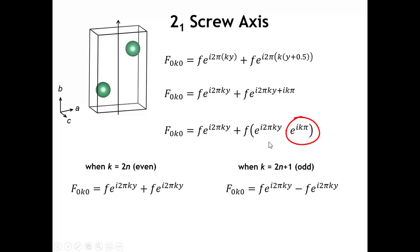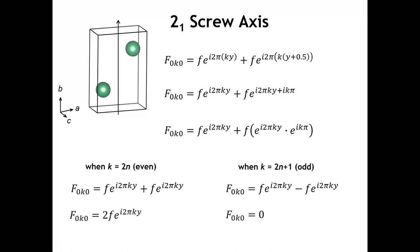When k is an odd number, like 1 or 3, e to the i k π becomes minus 1. So we have a difference instead of a sum of those two identical terms. When k is even, we get a nonzero structure factor; when k is an odd number, the two terms cancel and the structure factor goes to zero. That is exactly consistent with the reflection conditions for having a 2 sub 1 screw axis.